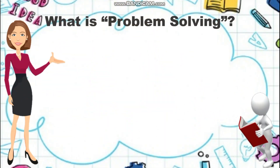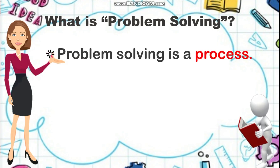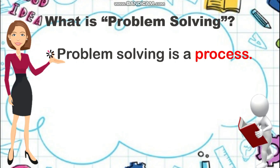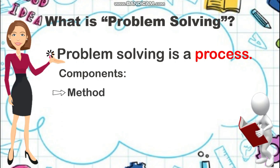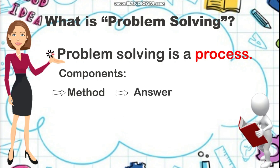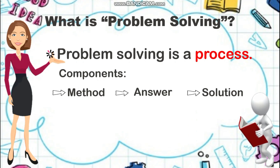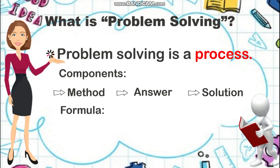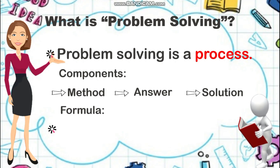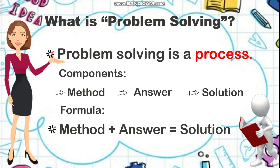Next, we have problem solving. So what is problem solving? Problem solving is a process — it is an ongoing activity wherein your knowledge shall be used to discover a new knowledge. We have three different components of problem solving. The first one is the method: the strategies and techniques that you use to solve a problem. Then we have the answer: the results of the methods you use. And the solution: the combination of method and answer. So the formula is: method plus answer equals solution.